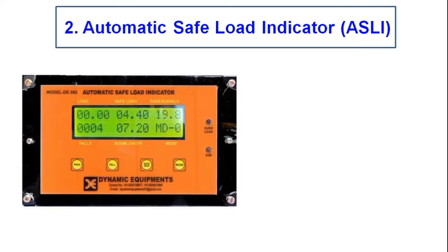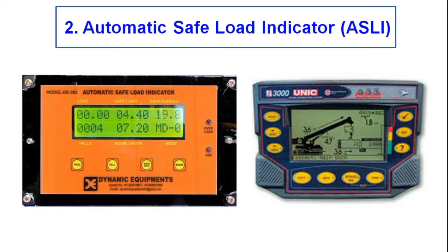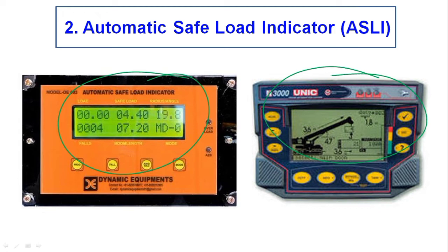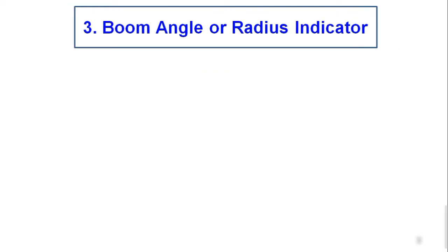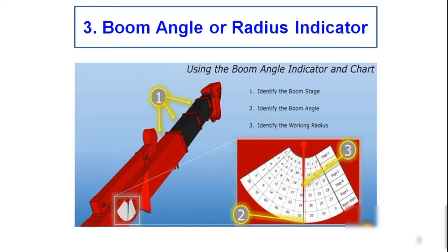The second safety device is the automatic safe load indicator. This device is installed on mobile or portable cranes to alert the operator if the lift is exceeding the safe operating range of the machinery. In some cases the device will physically lock the machinery in circumstances it determines to be unsafe.